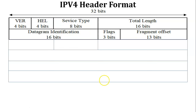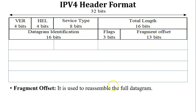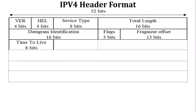The next field is Fragment Offset, which contains 13 bits of data. The purpose of Fragment Offset is to reassemble the data and reconstruct a full datagram at the receiver side. Since datagrams are sent as different fragments and may arrive at the destination at any time, the receiver uses the Fragment Offset field to collect all fragments and reassemble them into the original full datagram.